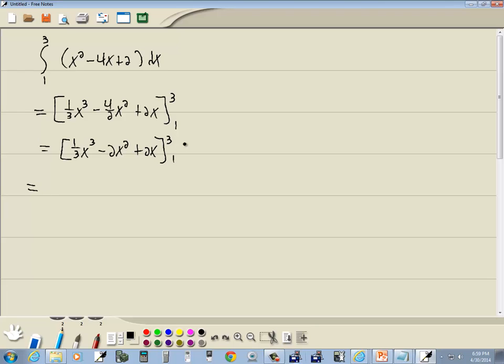Now we want to plug 3 in. So we'll have 1/3 times 3³ minus 2 times 3² plus 2 times 3. So we'll plug in at x equals 3 here.